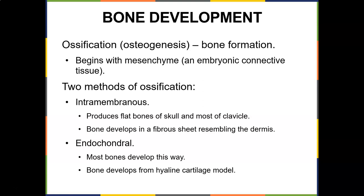Meanwhile, adjacent mesenchyme condenses, and at the surfaces osteoblasts beneath the periosteum deposit layers of bone. That's how ossification occurs intramembranously. Endochondral ossification produces most of the other bones, so we'll spend most of our time on that.